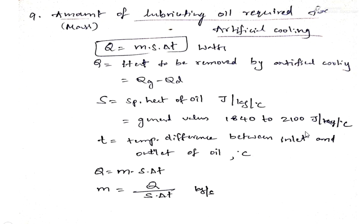Solve for the mass of lubricating oil in kg/s, then convert to kg/min by multiplying by 60, or to kg/hr using the appropriate factor. This completes the design procedure for journal bearings. Thanks for watching — please subscribe for more videos.